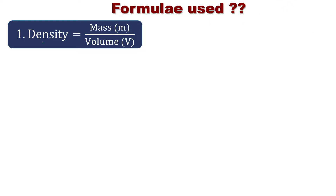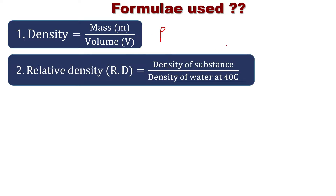Density is equal to mass by volume, and density is represented by rho. For relative density, I have a shortcut formula: relative density is equal to the density of a substance divided by the density of water at 4 degrees Celsius. Relative density has no unit, meaning this ratio involves two similar quantities — the density units cancel out.